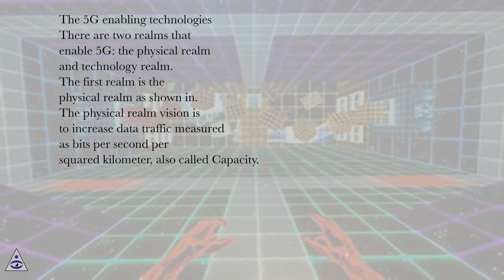The 5G Enabling Technologies. There are two realms that enable 5G, the physical realm and technology realm. The first realm is the physical realm. The physical realm vision is to increase data traffic measured as bits per second per squared kilometer, also called capacity.